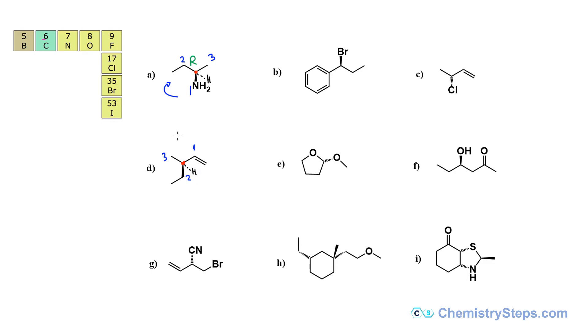So dashed line, H, and the arrow is going again clockwise. So this will be R.